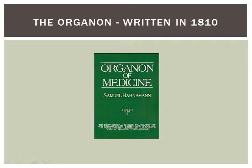He had a huge issue with physicians who did not make their own medicine, because he felt the whole pharmaceutical industry — more than 200 years ago — was completely corrupt. The only way around it was by making your own medicine. He was absolutely insistent that doctors should make their own medicines and never buy things from a pharmaceutical company. Some things haven't changed much since Hahnemann's time — in our country the pharmaceutical industry seems to be a huge lobbying money-making force.